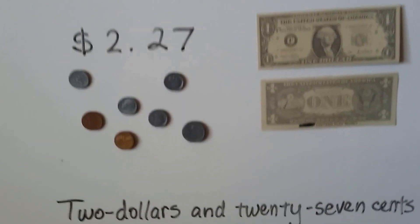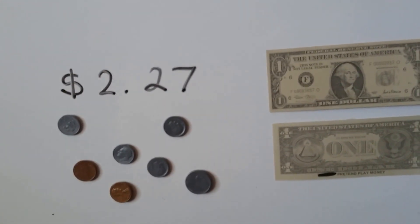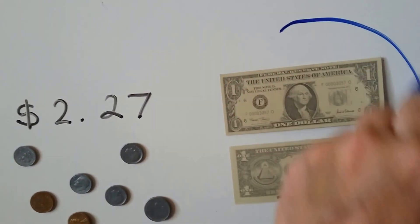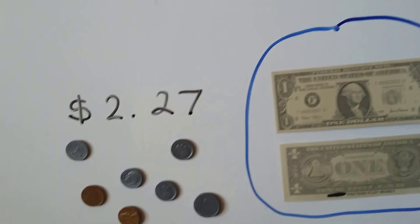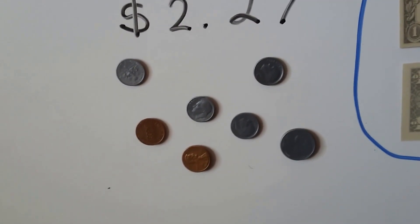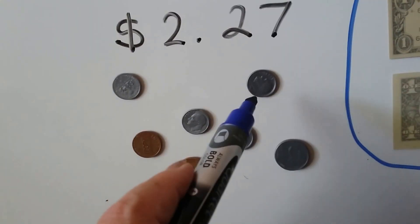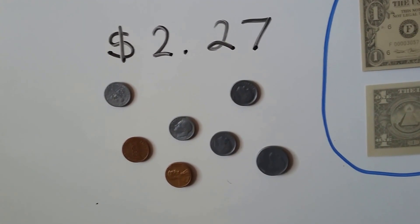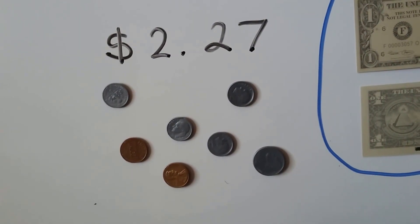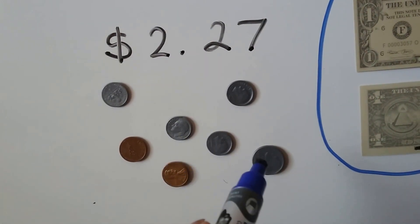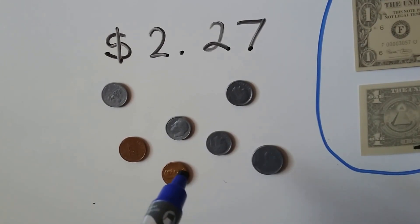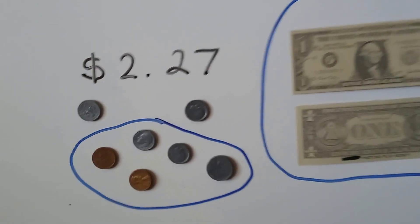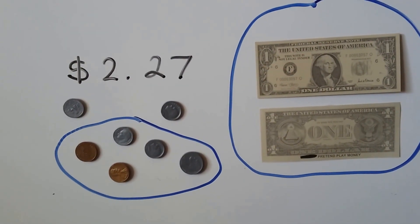Let's try this one. We need 2 dollars and 27 cents. Well, I see 2 dollars right here, two 1 dollar bills. We need both of them, don't we? Now we need to make 27 cents. I see 1, 2, 3, 4 dimes, a nickel, and 2 pennies. So how can we make 27 cents? Well, 2 dimes is 20, and a nickel is 25, and we can do 26, 27. So if we circle these, we'll have the 27 cents, and that will be 2 dollars and 27 cents.